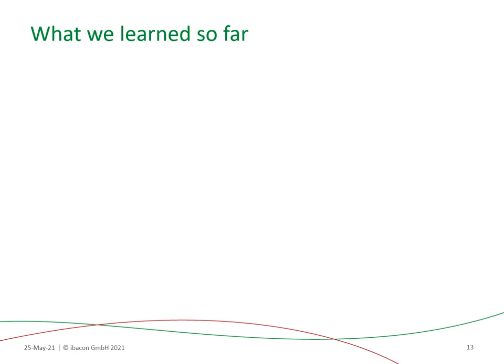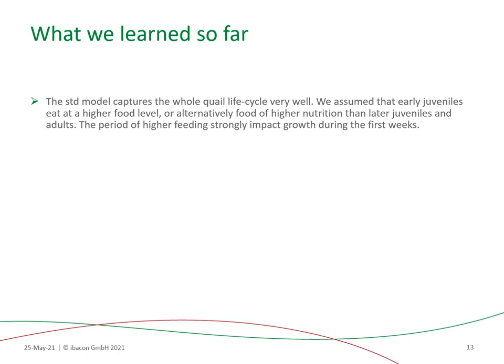In conclusion, this project allowed us to take the first steps towards the standard development and use of a model for analyzing standard OECD bird reproduction data used in environmental risk assessment of plant protection products. We saw that the standard model captures the whole life cycle of the quail very well. In this model, we assume that the early juveniles eat at a higher food level, or food with higher nutrition content, than the later juveniles and adults.